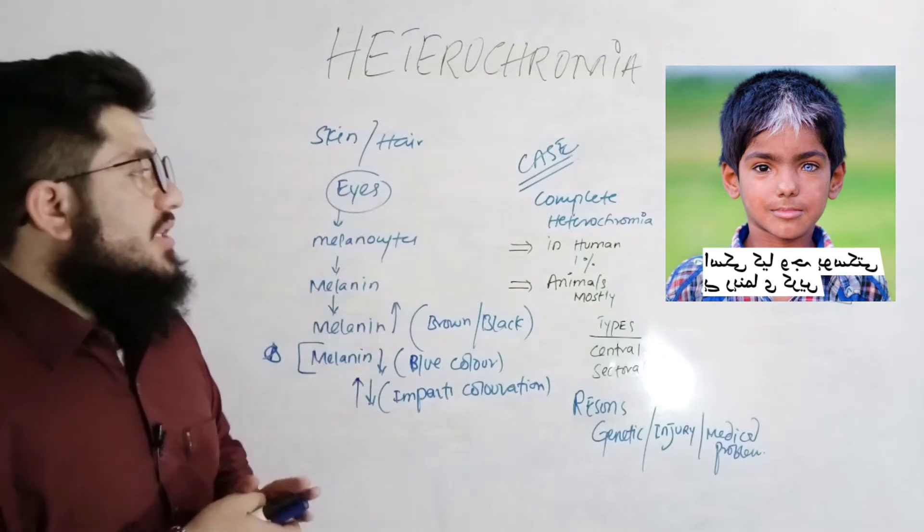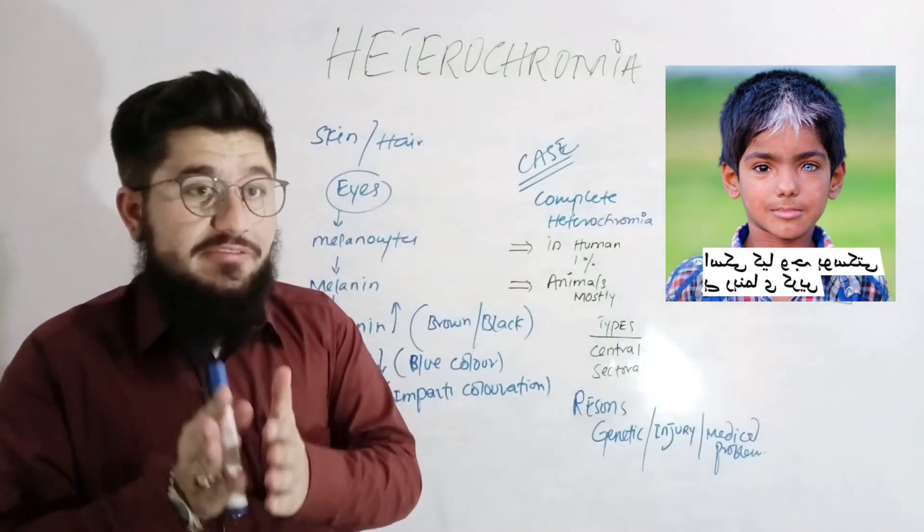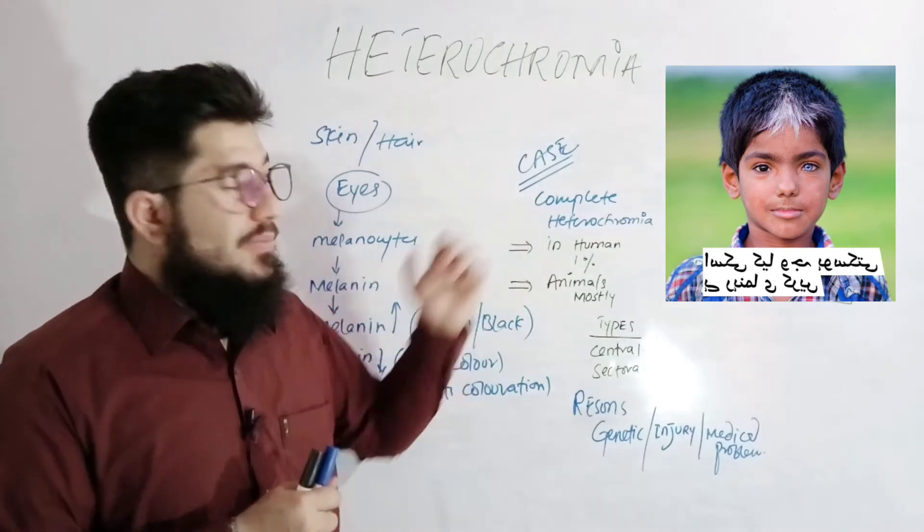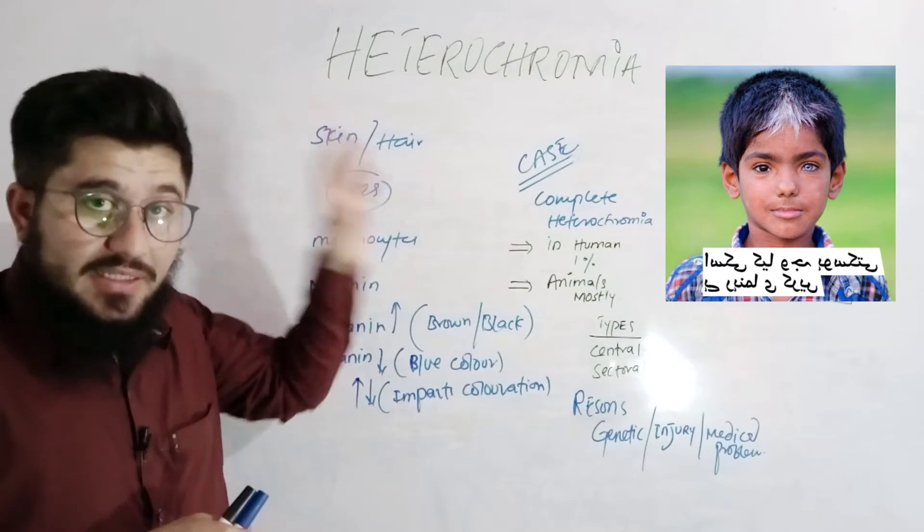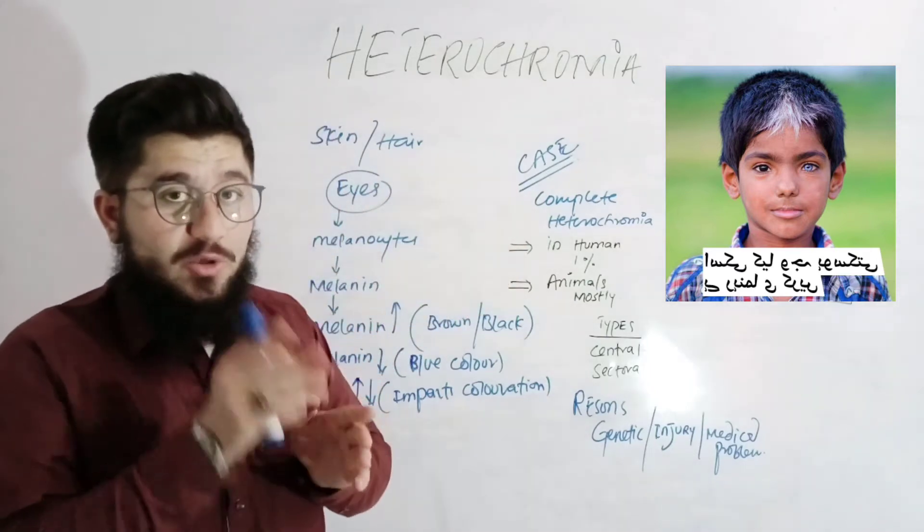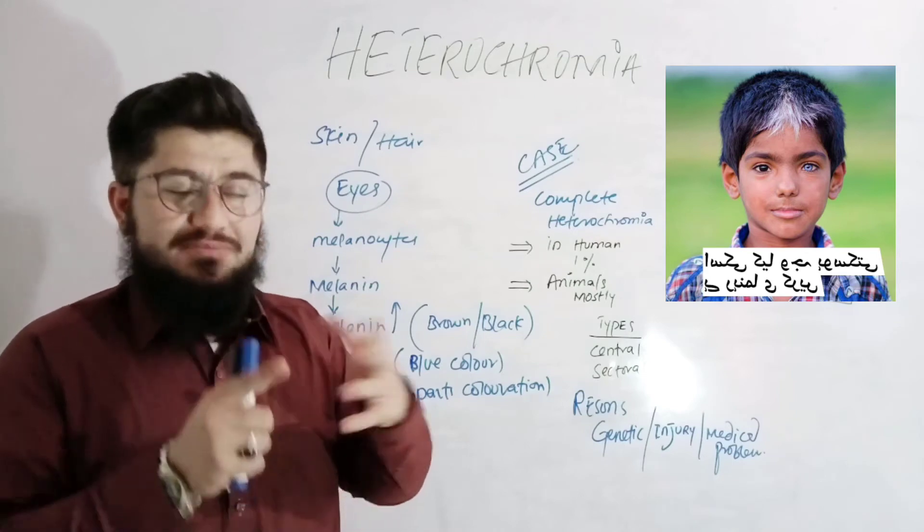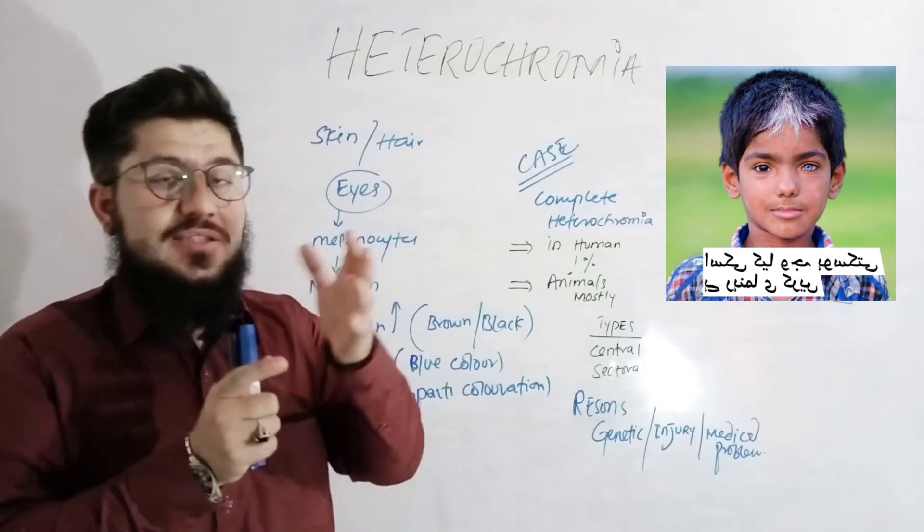Now, coming to the case, here we have a person having one eye color totally different from the other. The reason behind is just this melanin. In this particular single individual, there is an unequal distribution of melanin in one eye and in both the eyes. In one eye it is excess, in another it is less.